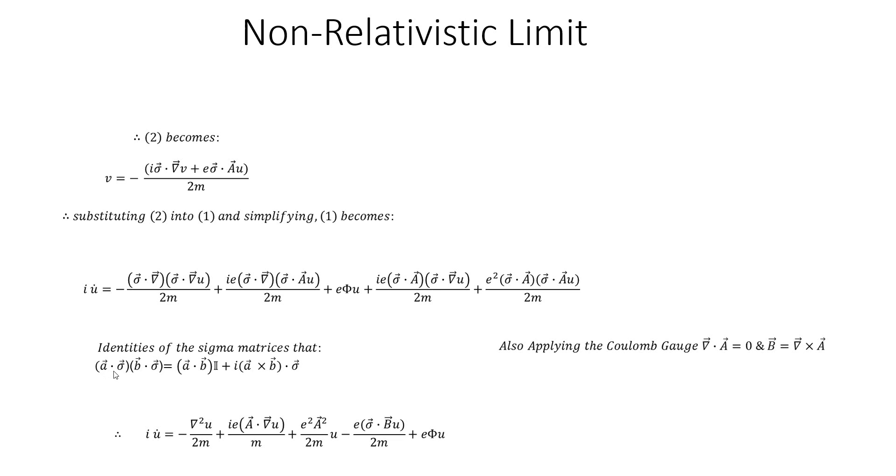Now I'll be applying some properties or identities of the sigma matrices, such that a dot sigma times b dot sigma equals a dot b times identity matrix plus i times a cross b dot into the sigma matrix, where vector sigma is sigma x plus sigma y plus sigma z. As well, another consideration, I'll be using a Coulomb gauge where the divergence of the vector potential of the four vector equals zero, as well as the fact that b is the curl of the vector potential a.